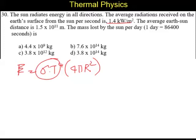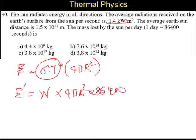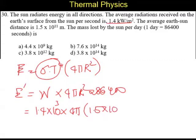The energy radiated by the sun for one day is W (solar constant) into 4πr² into 86,400. Substituting for W as 1.4 kilowatt — that is 1.4 into 10 power 3 — and r is given as 1.5 into 10 power 11, we compute 1.4 into 10³ into 4π into (1.5 into 10 power 11) squared into 86,400.